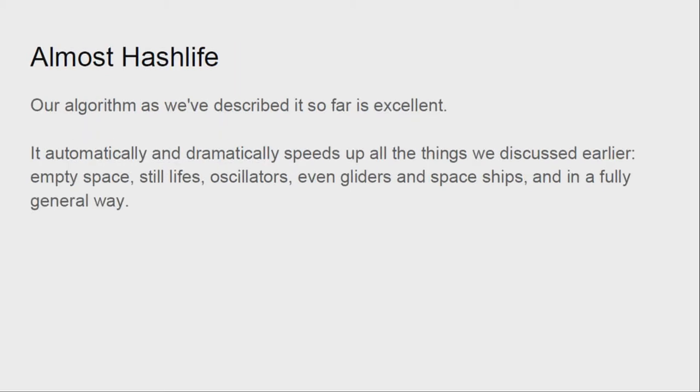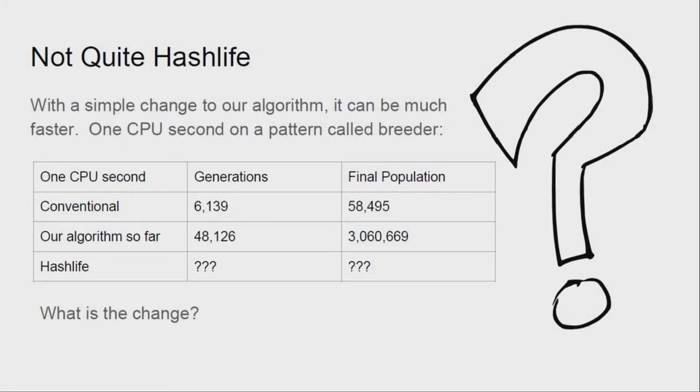So what we have is a great algorithm. It's really fast. It's almost hash life. It's faster than almost all algorithms out there. It optimizes oscillators, and gliders, and spaceships, and all that stuff. For example, the conventional fast quick life in Gali will do about 6,000 generations in a second for a pattern called Breeder, which is this pattern. It will do about 48,000 generations in one second if we use what we've described so far, which is not quite hash life. And the pattern gets quite big with millions of cells.